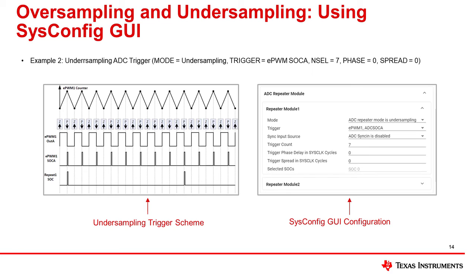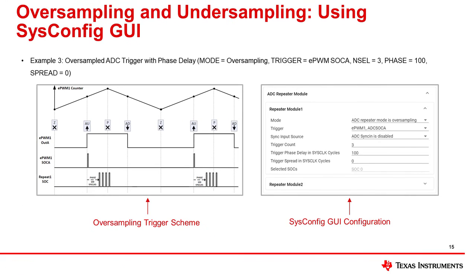On the left, you can see the undersampling trigger scheme, and on the right, you can see the ADC Repeater Module configuration in the SysConfig GUI. The Repeater Module can delay the initial trigger by a specified number of sysclock cycles. This feature can be used in combination with oversampling or undersampling modes. Phase Delay enables the application to tie the trigger start point to an EPWM event while allowing for a necessary sampling delay. In this third example, you can see an oversampling trigger scheme with phase equal to 100 on the left side, and the equivalent SysConfig configuration on the right side.